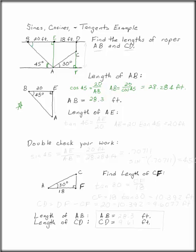We can also use this triangle to find the length AE. The length of AE is found using tangent. Tangent of 45 is opposite over adjacent, or AE over 20. AE is 20 tangent 45, which is 20 feet.